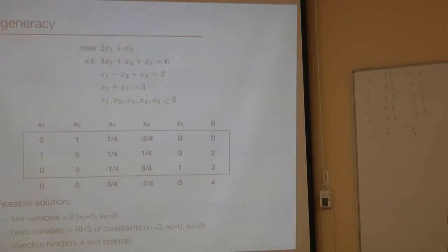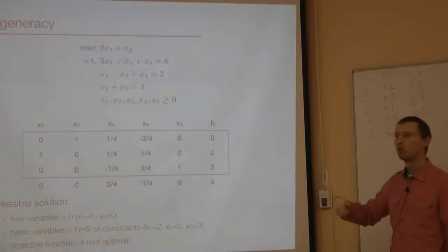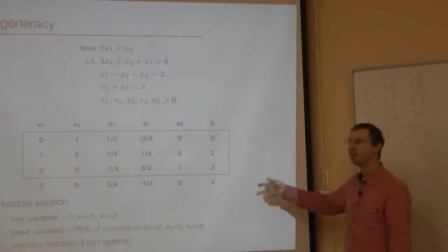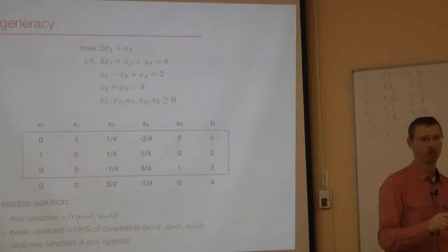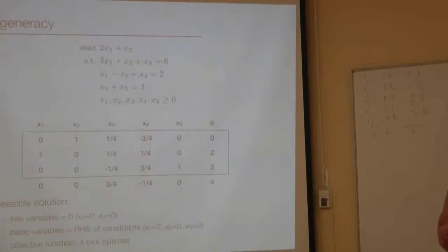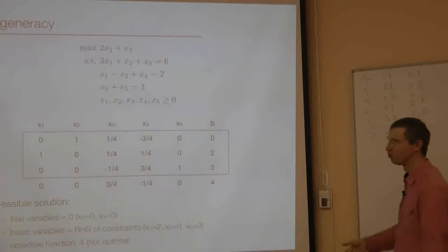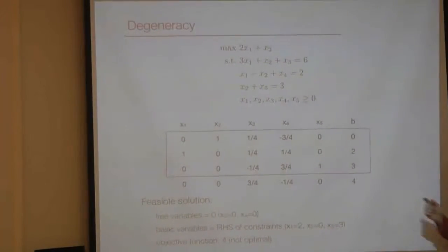In rare cases, what can happen is that we perform more and more pivoting operations and still find the same solution over and over — this is cycling. The simplex algorithm can theoretically run into an infinite loop: if the problem is degenerate, we might keep performing additional pivoting operations and never find a better solution.